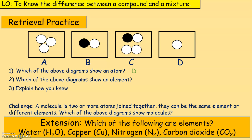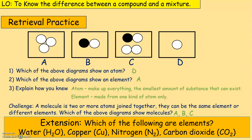Number two: which of the above diagrams shows an element? The answer is A. Now question three asks you to explain how you knew. Atoms are the smallest amount of substance that can exist. From looking at the diagrams, D is the smallest amount of substance we can see.